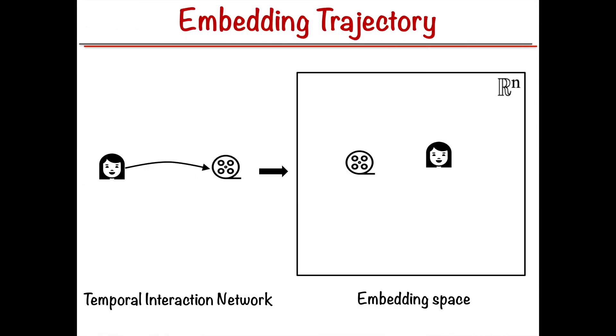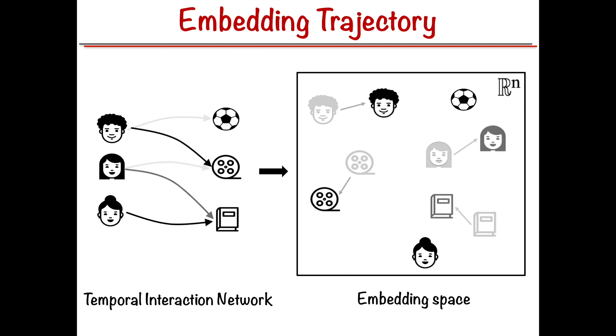Representation learning presents a powerful approach to model the dynamic evolution of users and items where each user and item can be embedded in a Euclidean space and their evolution can be modeled by an embedding trajectory in the space. These trajectories can be trained for downstream tasks such as recommendations and predictions.